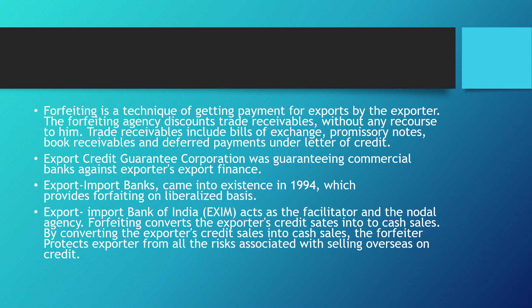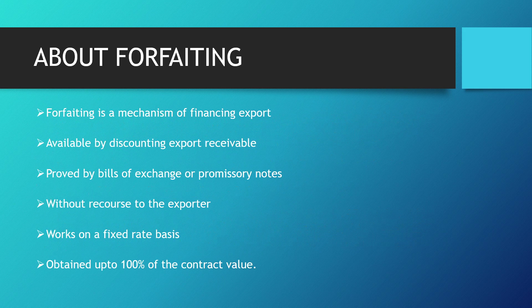By converting the exporter's credit sale into a cash sale, the forfeiter protects the exporter from all the risks associated with selling overseas on credit. Forfeiting is a mechanism of financing exports, available by discounting export receivables evidenced by bill of exchange or promissory notes, without recourse to the seller or exporter. It operates on a fixed rate basis — called discount — and is available up to 100% of the contract value.